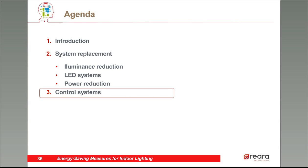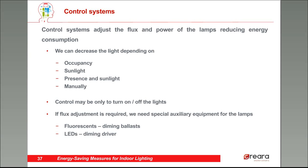We commented that in order to reduce lighting energy consumption, we can reduce the system power or the time the lamps are turned on. We can reduce time of use with good habits — for example, turning off the lights when we leave a room — or with control systems. This is especially interesting in public-use buildings. We can regulate and adjust the light depending on different inputs. The two factors we usually control are occupancy, the presence, and the sunlight. The control system has to measure presence and sunlight, evaluate them, and adjust the lamps in response.